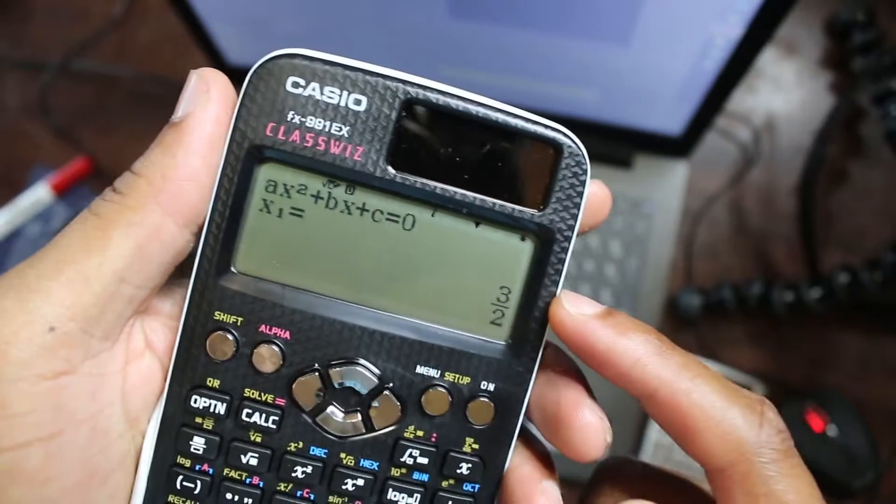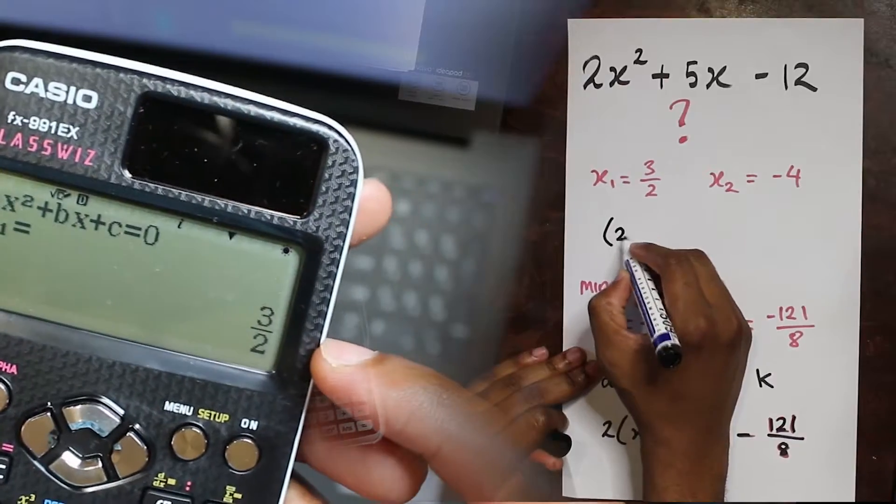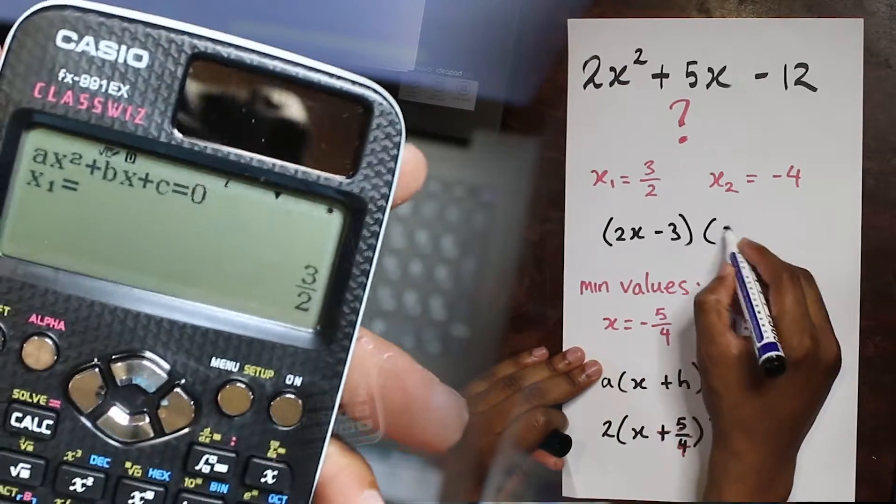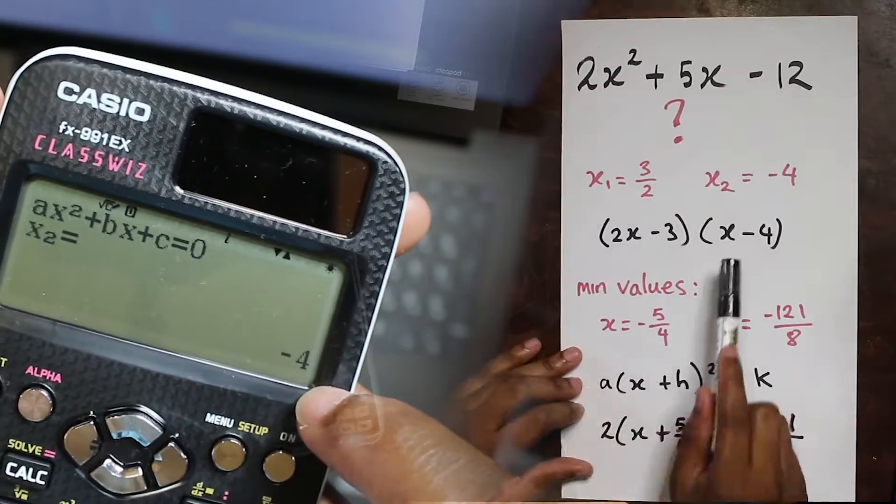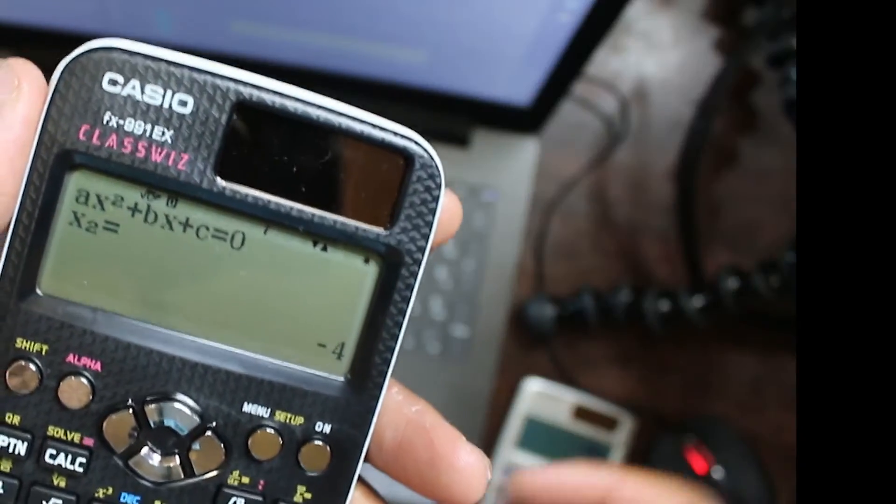You can also use these values to factorize. Say you have 3 over 2, that means the factor is 2x minus 3. And the next factor, since this is negative 4, will be x plus 4. You just change the sign and invert.